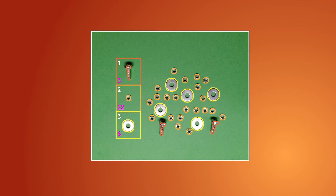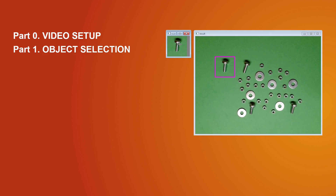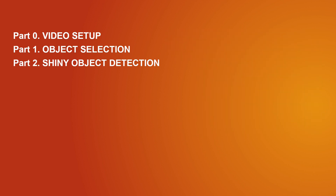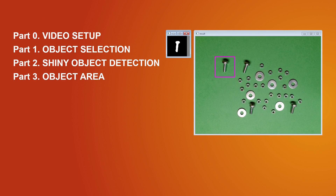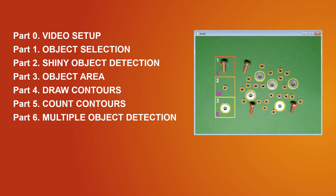Let's start with a short plan of what we are going to do. First, we will prepare the video setup for our camera. Next, we will define the window where we will put the object we want to detect and count. After that, we will create a function to detect the shiny object. We will extract objects using the array as a selection parameter, draw contours on objects according to the selected object, and count contours accordingly. We will finish by modifying the code for multiple object detection.